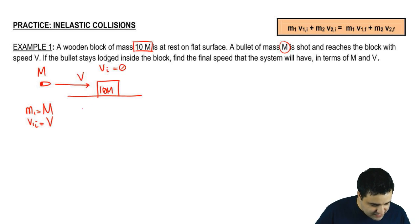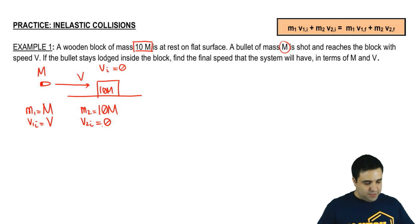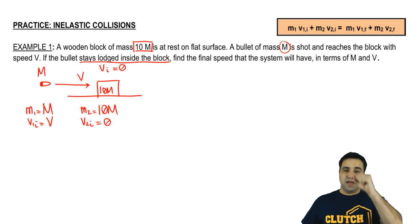Mass of the second object is 10m and the initial velocity of the second object is zero because it's at rest. And then it says if the bullet stays inside of the block, the bullet stays lodged inside of the block, find the final speed that the system will have. So the idea is you got a block, the bullet goes inside of the block and then it causes the block to move forward.